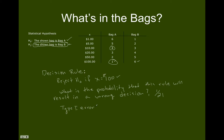There are actually two types of errors: Type 1 error and Type 2 error. The Type 1 error, which is alpha, in this example is equal to 1 out of 21. Type 1 error happens when we reject H0 and H0 turns out to be true. We don't generally know whether H0 is true for sure, but since we know the distribution of bills in the bag, we can speculate on the likelihood that we would make a Type 1 error.